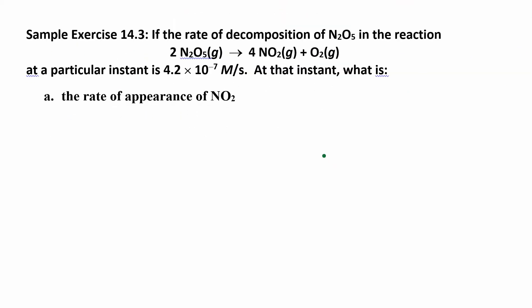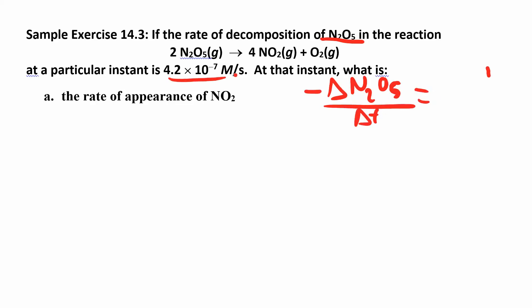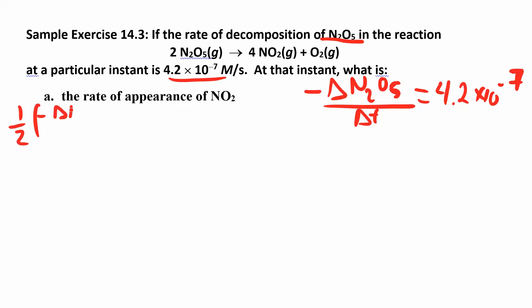Let's try another one — pause the video and try to work it out. The trick here is in the wording: if the rate of decomposition of N2O5 — so it's a reactant, it's decomposing — that's why I put a negative in front of it over the change in time. They give you that value: if that rate is 4.2 times 10 to the negative 7, find the other rates. So find the rate of appearance of NO2. The first thing you want to do is set up that expression, which was one half of negative change in N2O5 over change in time.